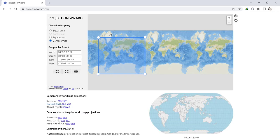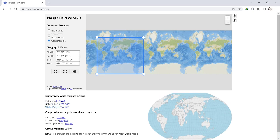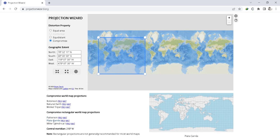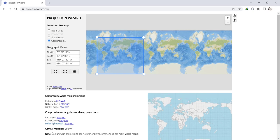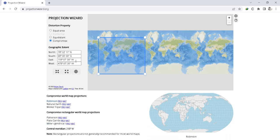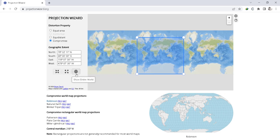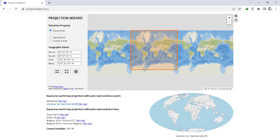Then we have the option for the compromise. Here we get compromise world map projections. Different options are available if we need to go for Robinson, Natural Earth, Winkel Tripel, and there are a few more options available. We can show the entire world with these options. So like I mentioned before, you need to play with this tool in order to get a better understanding.